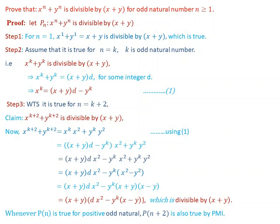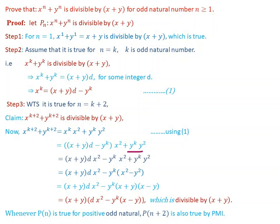Using Equation 1, we substitute x to the power of k by x plus y times d minus y to the power of k. The expression becomes: x plus y times d minus y to the power of k, all times x squared, plus y to the power of k times y squared. Expanding: x plus y times d times x squared minus y to the power of k times x squared plus y to the power of k times y squared.